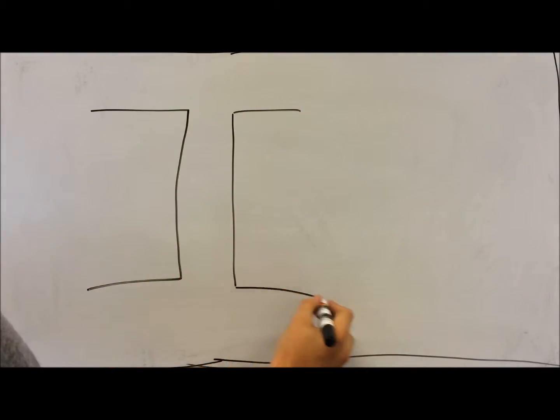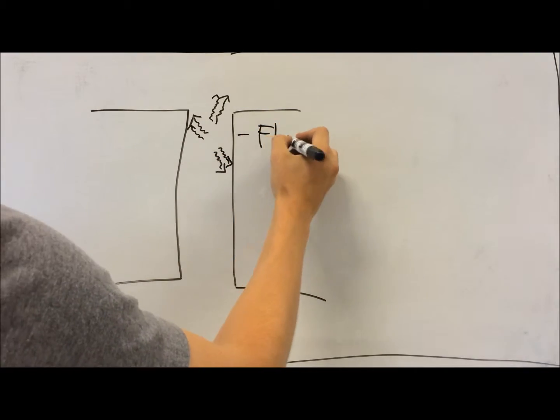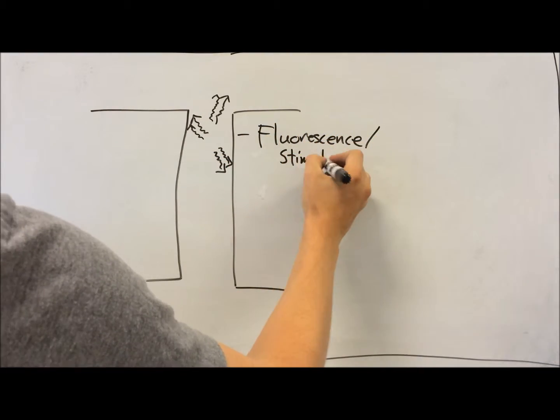Let's look at a simple Fabry-Perot cavity as an example. As the laser dye molecules begin to fluoresce, the released photons produce stimulated emission in adjacent molecules, amplifying the light.